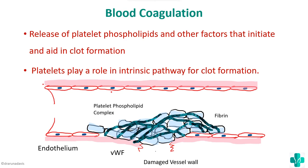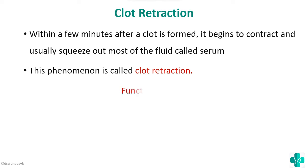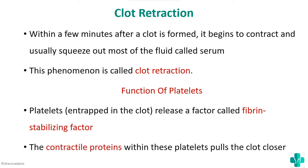For clot retraction: within a few minutes of clot formation, the clot begins to contract and squeeze out fluid called serum — this is clot retraction. Platelets entrapped in the clot release fibrin stabilizing factor, which stabilizes the fibrin. The contractile proteins inside the platelets then pull the clot closer, bringing the damaged vascular walls together. So platelets cause clot retraction by releasing fibrin stabilizing factor and using their contractile proteins.